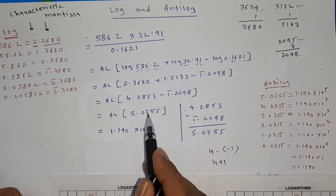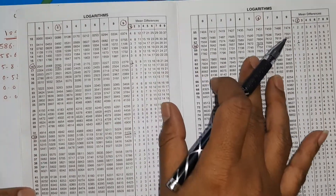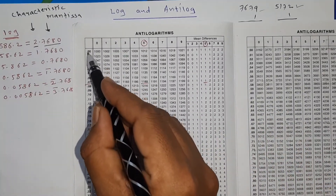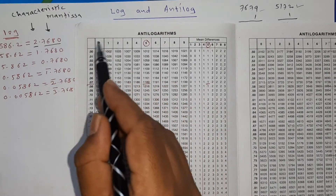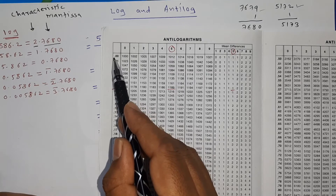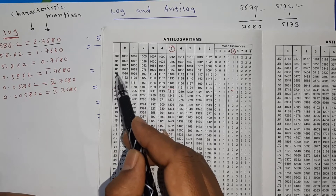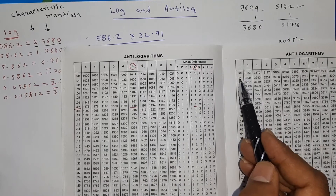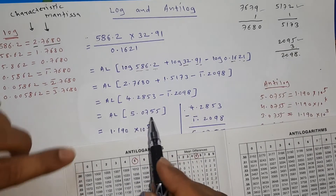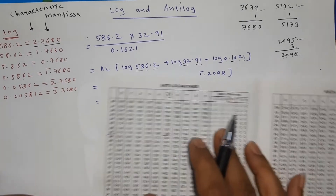We got a total of 5.0755 from the log calculation. Now we have to find the anti-log. Turn the page in the logarithm table and you will get the anti-log table. Again, the first two digits are seen in this column, the third digit in this column, and the fourth digit in the mean difference. In the anti-log table, all row values start with 0. — like 0.01, 0.02 ... 0.50. So in the anti-log you look at the digits after the decimal point.